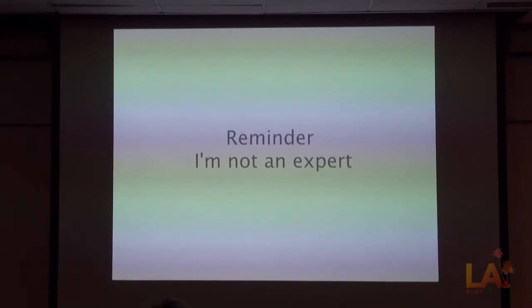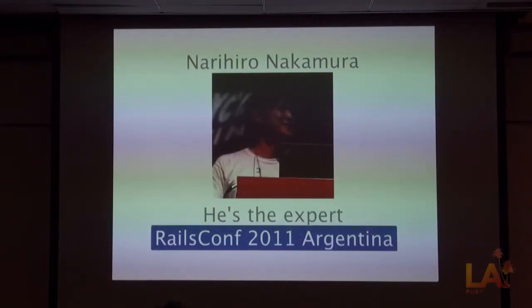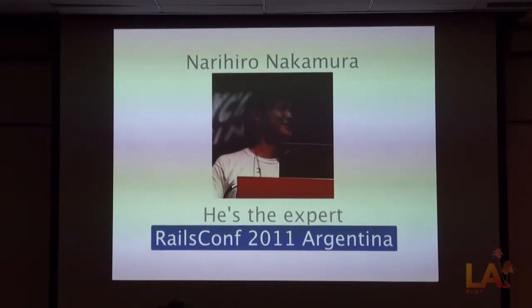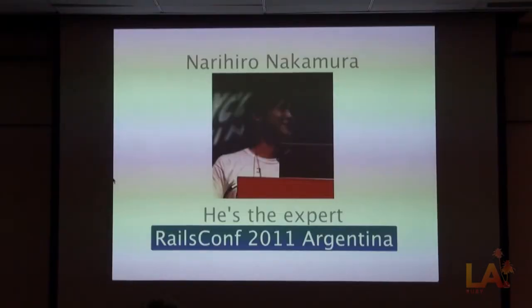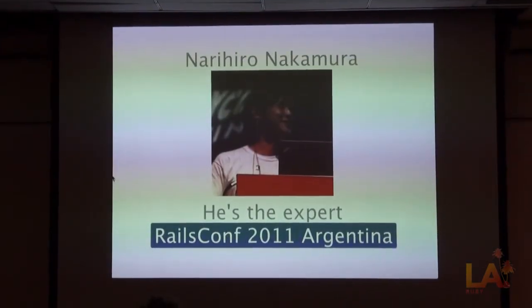Reminder, I'm not an expert. This guy, Naruhiro Nakamura — he knows. He's the expert. He gave a talk on the garbage collector at RailsConf 2011 in Argentina, and he's the main CRuby contributor. He basically wrote the garbage collector for Ruby, at least for Matz's Ruby, the MRI. He has a blog and a couple of videos. This is a link to one, and it's really insightful. That's where I get most of my information, including about parallel marking, which will come up later.